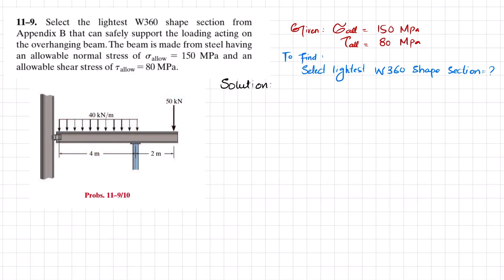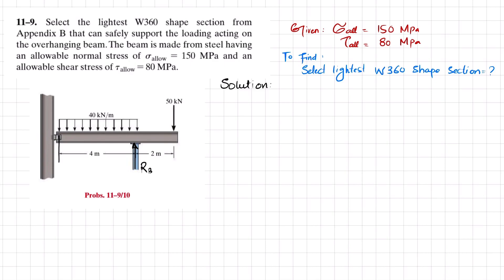We need to find the lightest W360 shape section. Starting the solution: we remove the reaction supports and identify the reaction forces. There will be a reaction force RB at one support and RA at the other. We will find these unknown forces RA and RB using the equations of equilibrium.